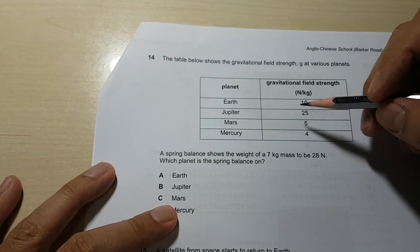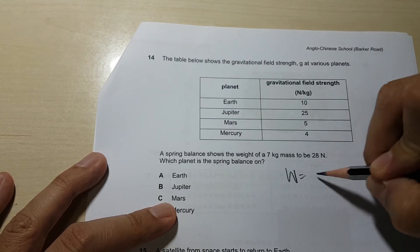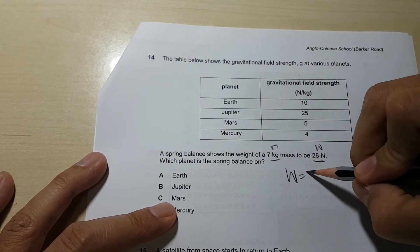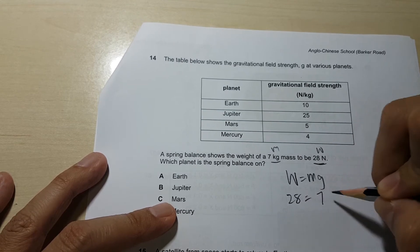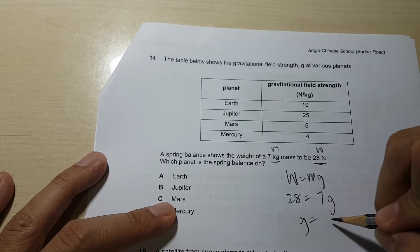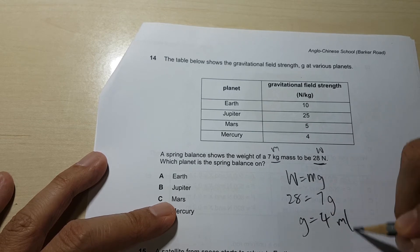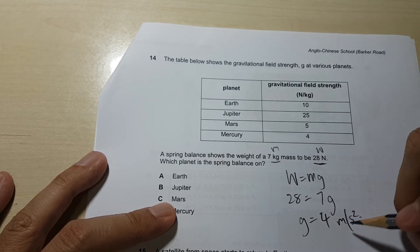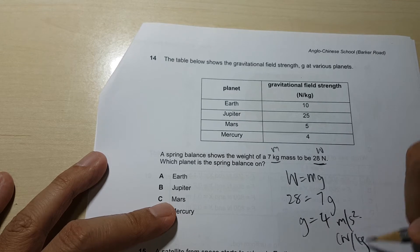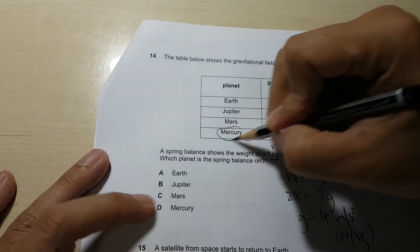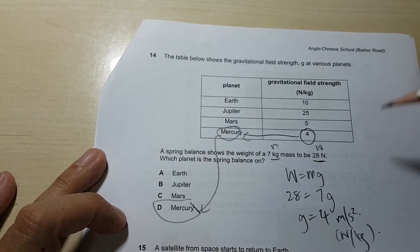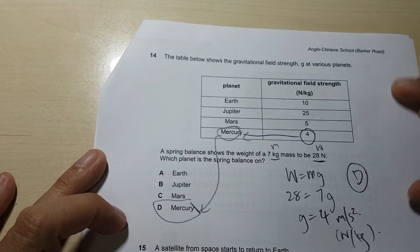Question 14. So the formula to use here is W equals MG. So W is 28 equals to 7G. Now G equals to 4 meters per second square, or 4 Newtons per kg. They are both the same units. The only one that's 4 is this, so it gives us Mercury. So answer D.